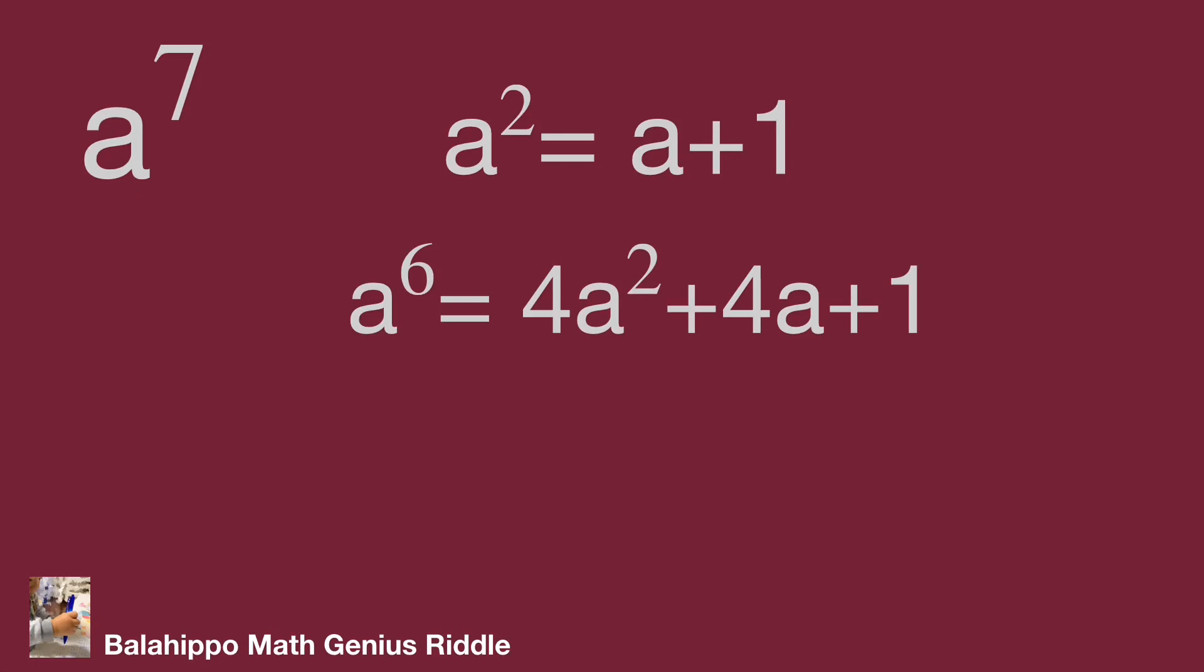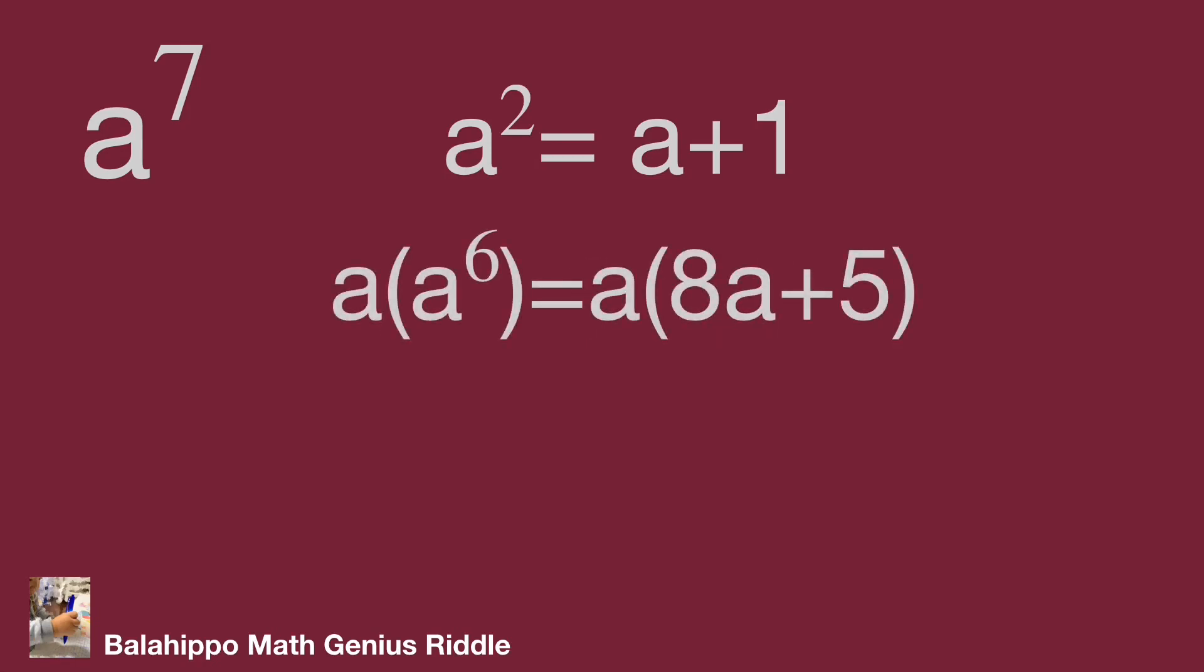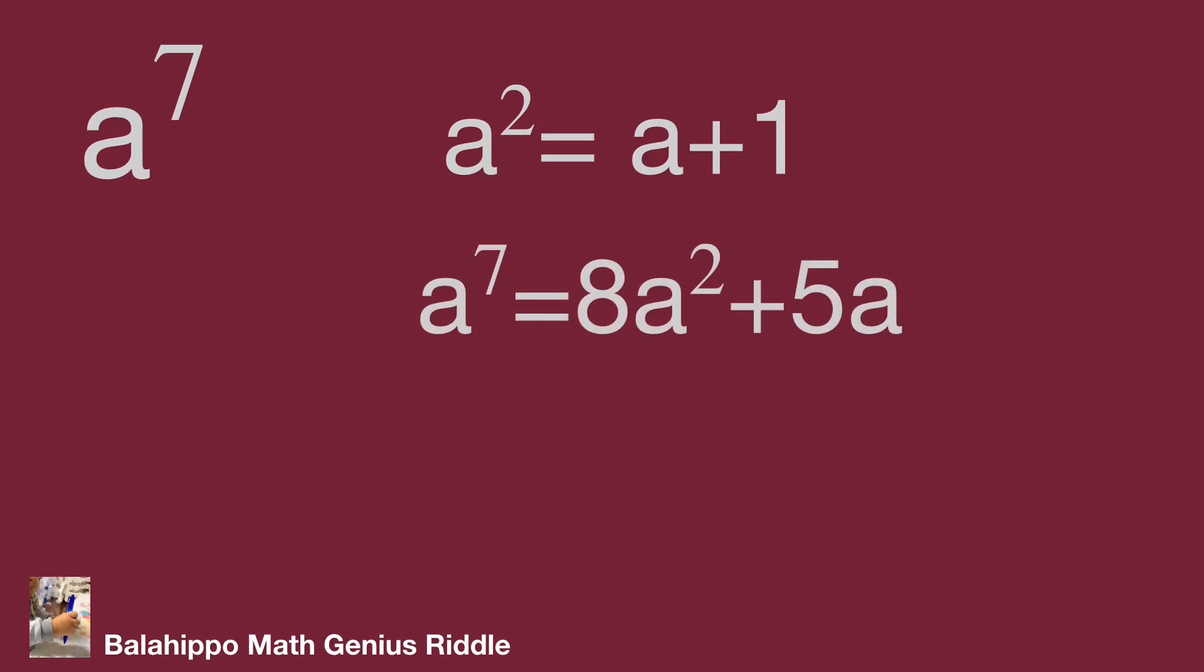Again, substitute a squared by a plus one to both sides of the equations. Find a power of seven equal to eight a squared plus five a.